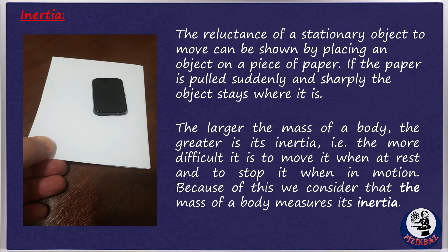Its effect is evident on the occupants of a car that stops suddenly—they lurch forwards in an attempt to continue moving, and this is why seat belts are needed. The reluctance of a stationary object to move can be shown by placing an object on a piece of paper. If the paper is pulled suddenly and sharply, the object stays where it is.